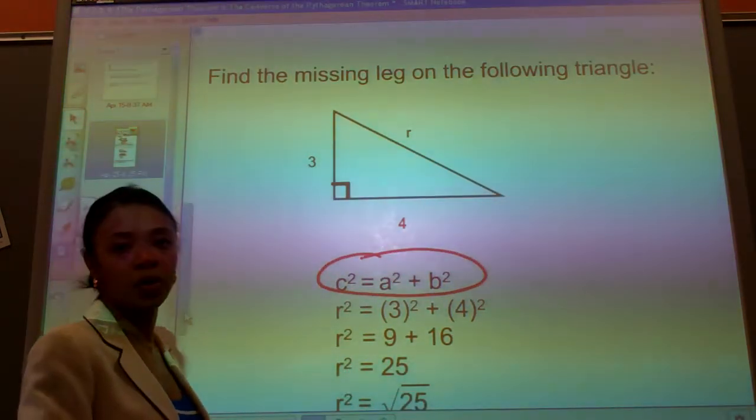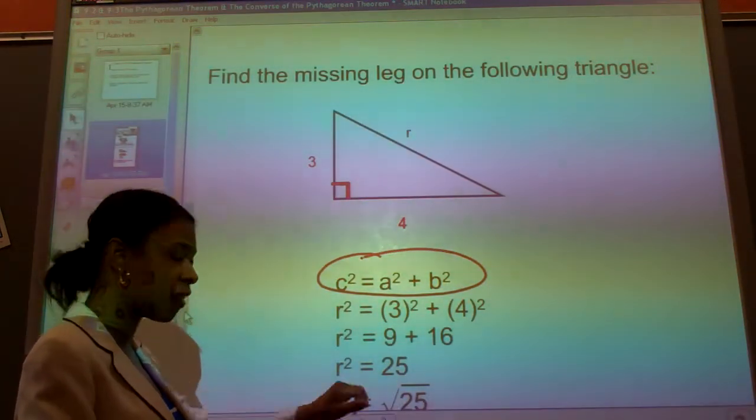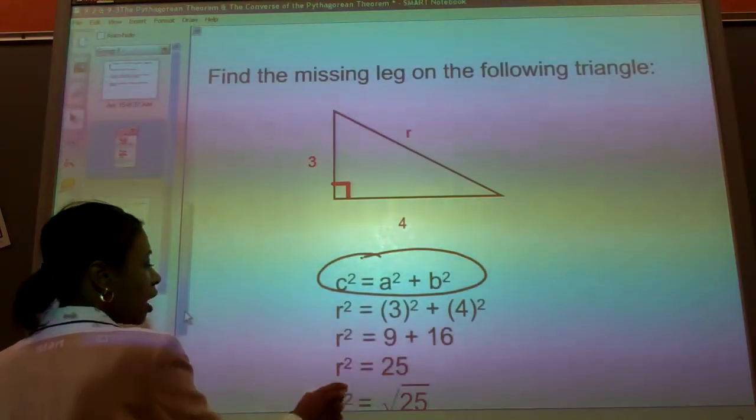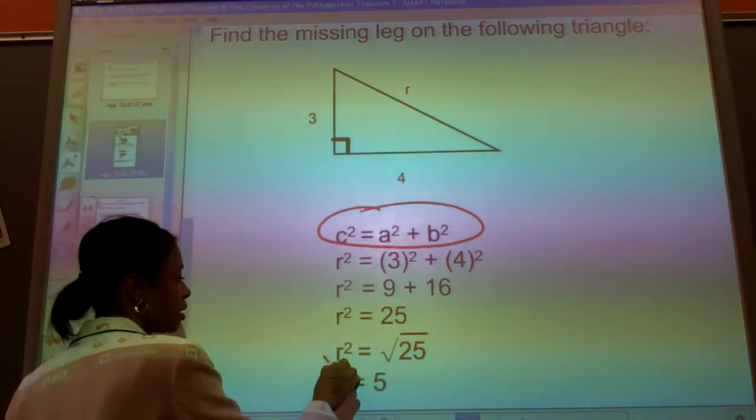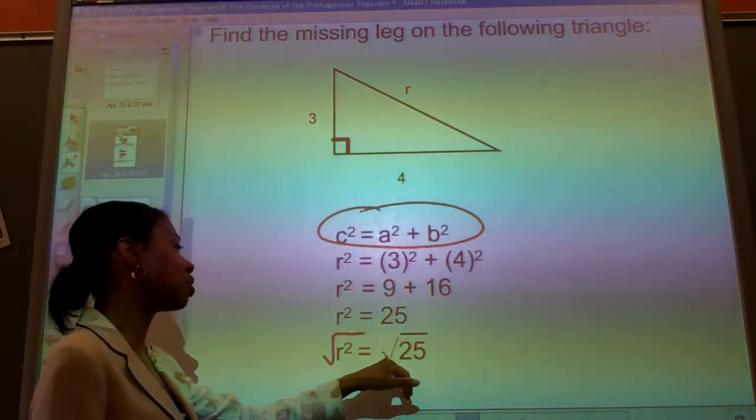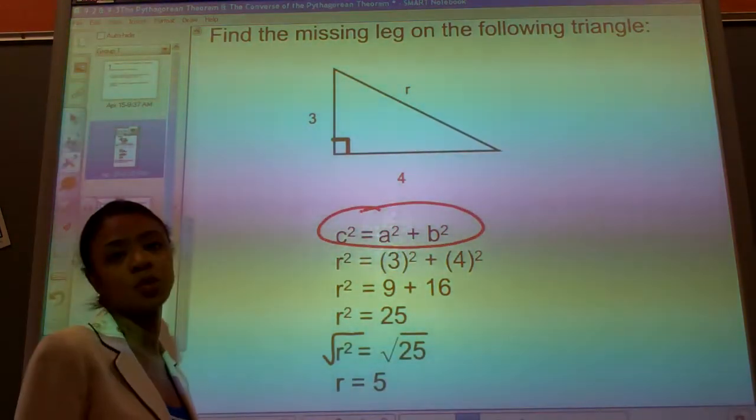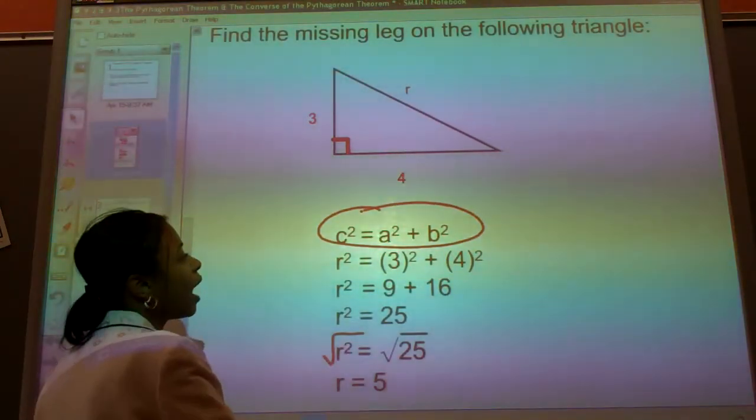Again, we know the value of R squared, which is 25, but what's R by itself? And the opposite of squaring a number is taking the square root on both sides. So the square root of R squared is equal to the square root of 25. R is going to be equal to 5.